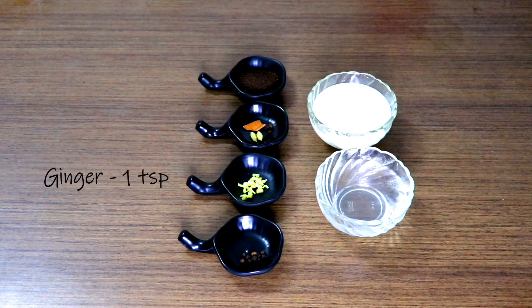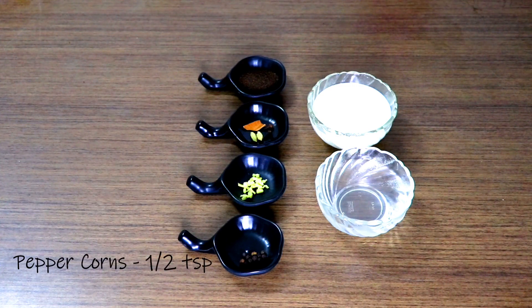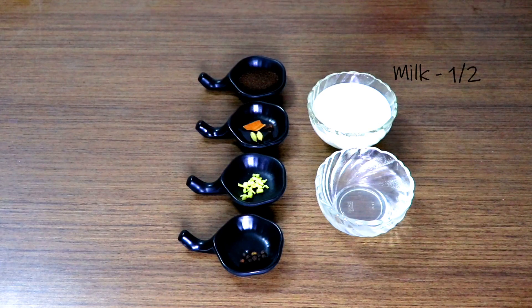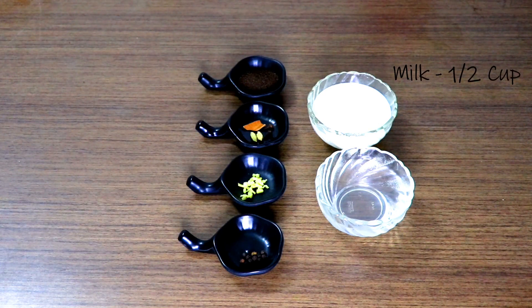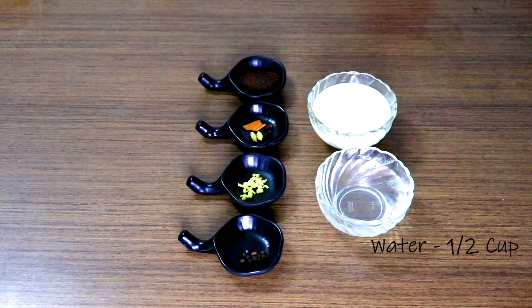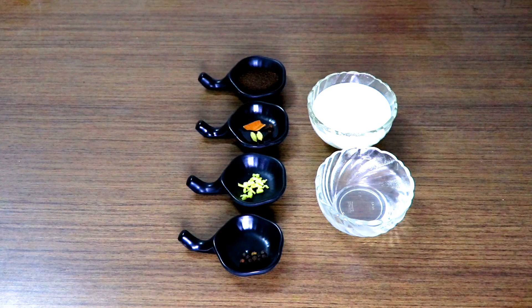One teaspoon of ginger, half a teaspoon of peppercorns. Here I'm using half a cup of milk and half a cup of water. One cup of milk can be used instead if you would like to have full milk tea. Here I'm using raw milk.